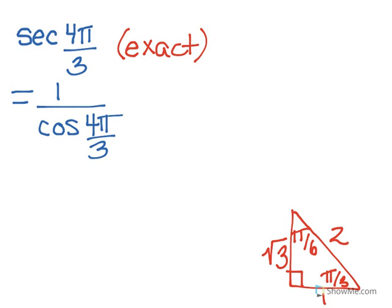So in order to use a special triangle, we need to show in standard position what the graph of 4π over 3 would look like.